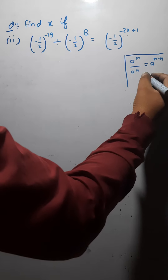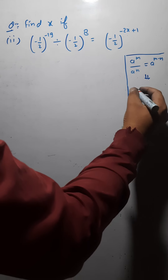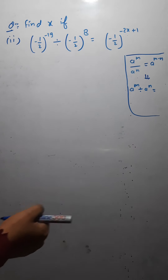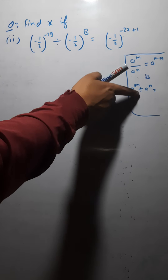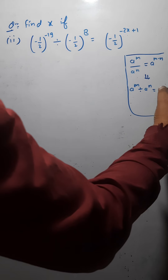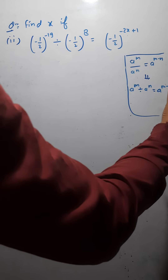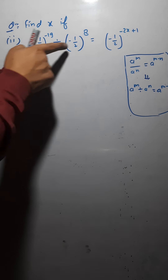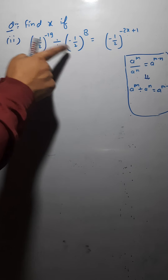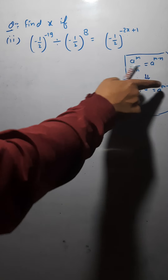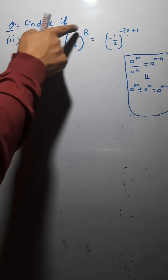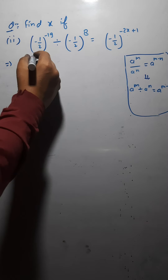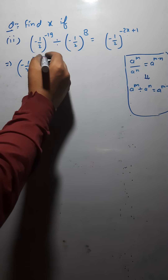You can also write it as a raised to the power m divided by a raised to the power m — it is the same result: a raised to the power m minus n. So the similar condition applies here. Since the bases are the same, the exponents are going to be subtracted. You would subtract minus 19 minus 8, giving (minus 1/2) raised to the power minus 19 minus 8.